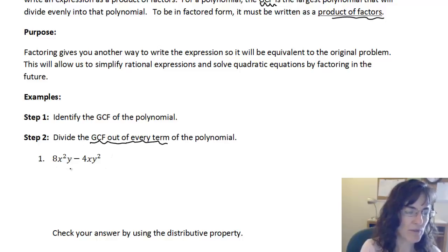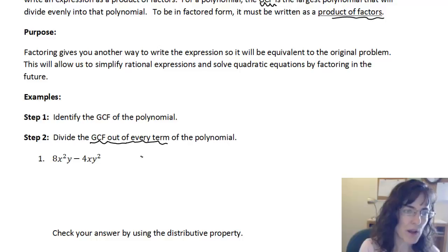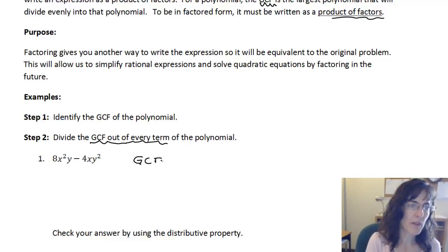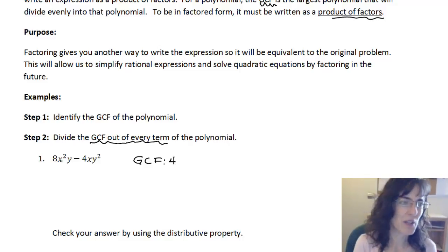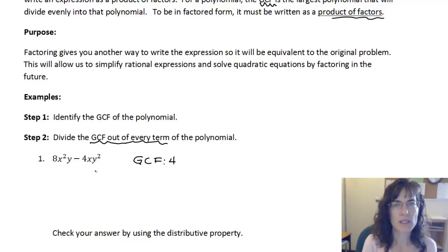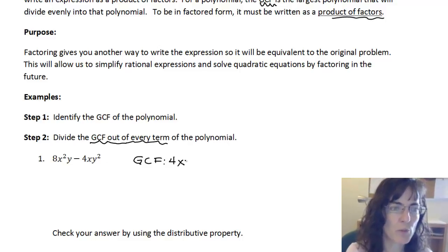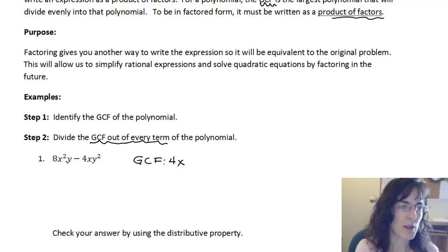When I look at this, I want to find the greatest common factor. Looking at just the numbers first, I have an 8 and a 4, and they're both divisible by 4. So my greatest common factor has a 4 in it, and maybe some variables too. We have an x-squared and an x. For the greatest common factor, we take the smallest exponent for any variable, and the variable has to appear in every term. Here we have x-squared and x, so we can only put x in the greatest common factor.